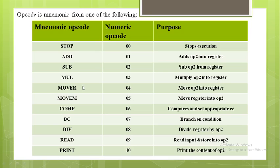The next mnemonic opcode is MOVER, which moves operand 2 into the register. The next mnemonic opcode is MOVEM, corresponding to numeric opcode 05, whose purpose is to move the register into operand 2. Next is COMPARE, corresponding to numeric opcode 06, which compares and sets appropriate condition codes.